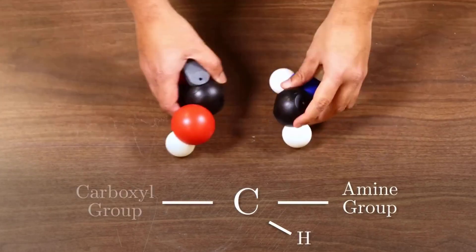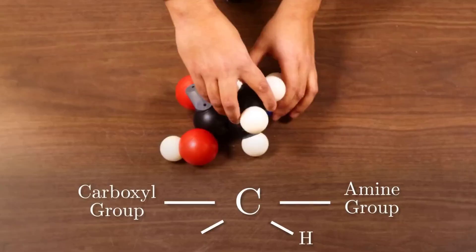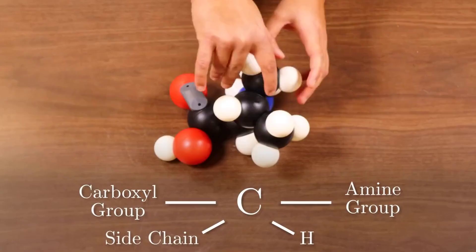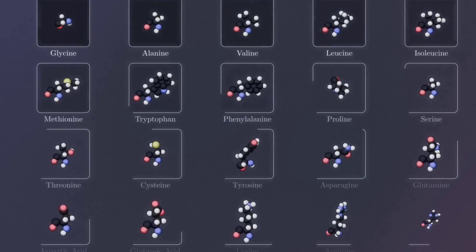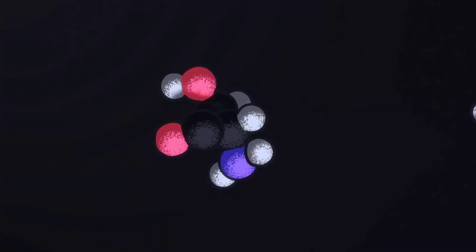Protein folding is nature's most efficient algorithm, but for decades it was biology's black box, until AlphaFold flipped the script by turning protein prediction into a machine learning problem.